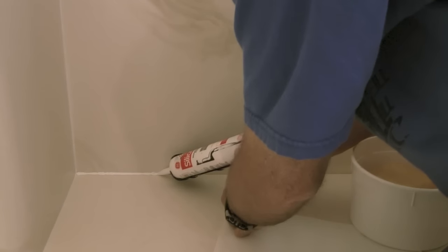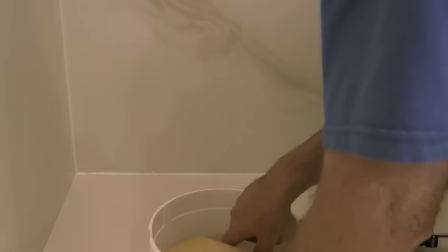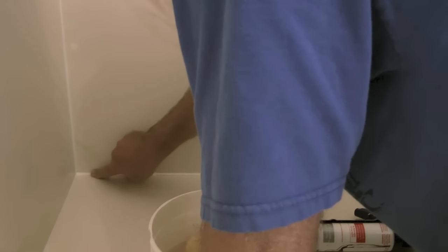What I usually like to do is silicone one wall section then use my finger and smooth out that section before I move on to the next wall section. That way the silicone caulk doesn't dry out on you.